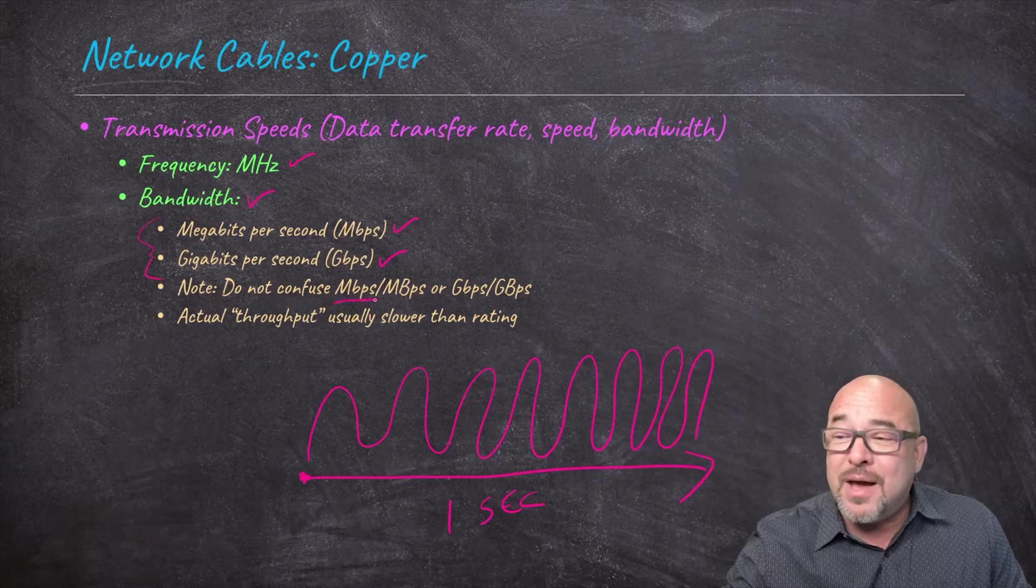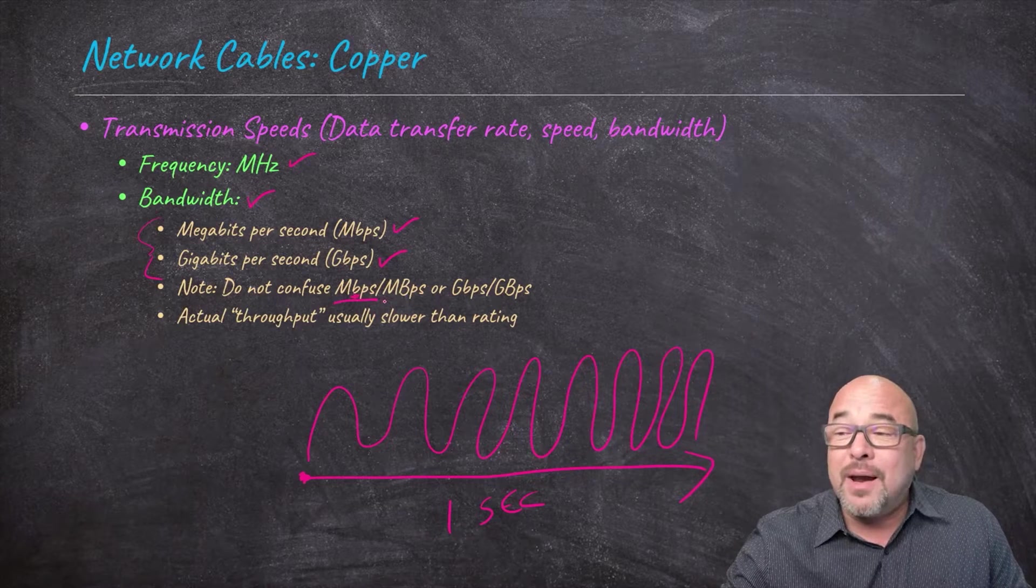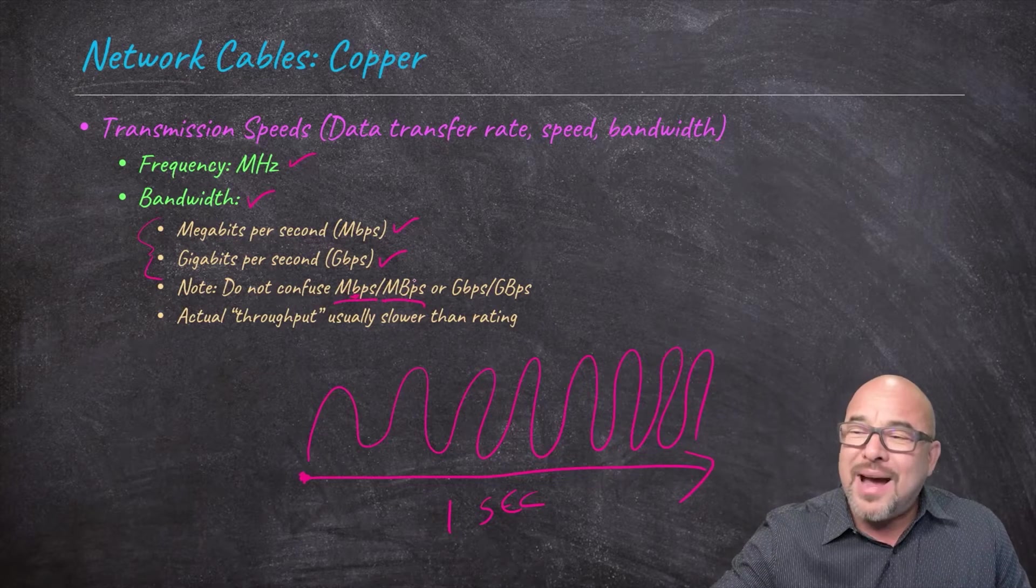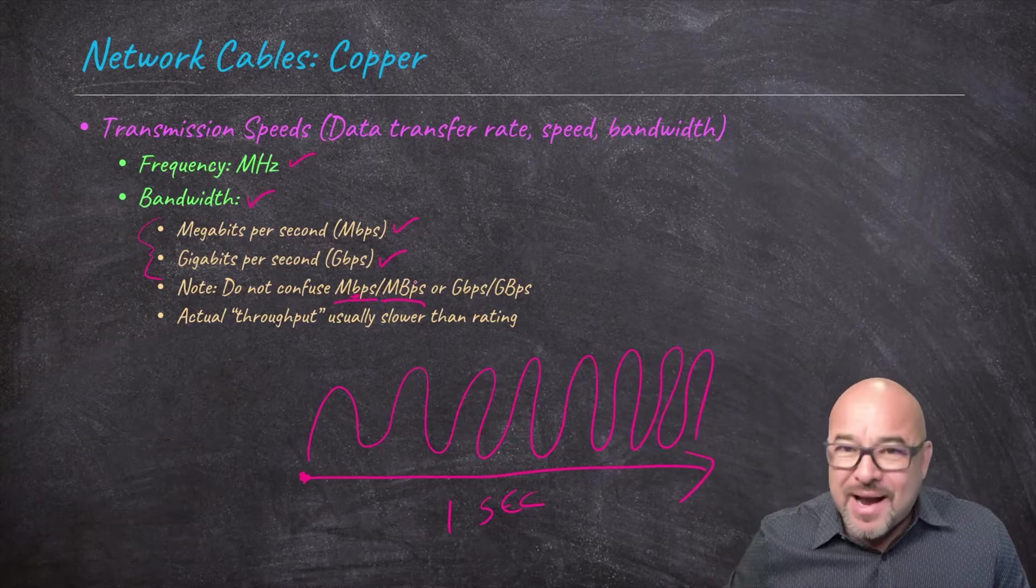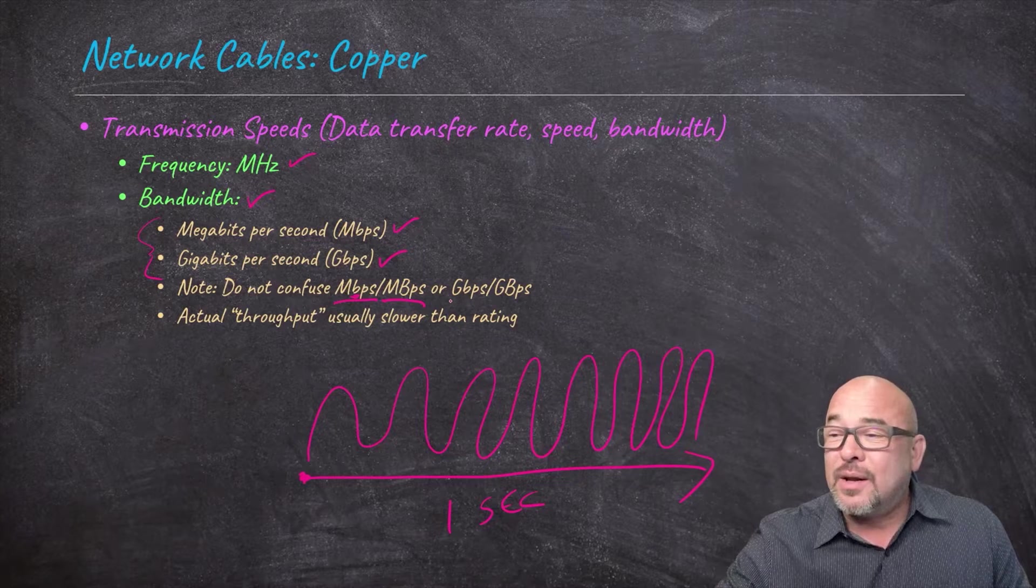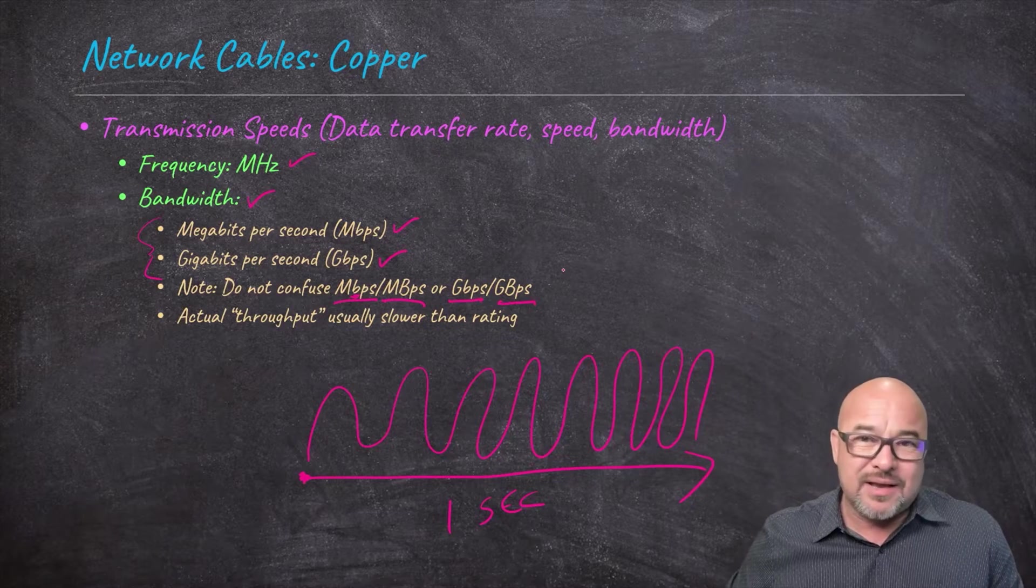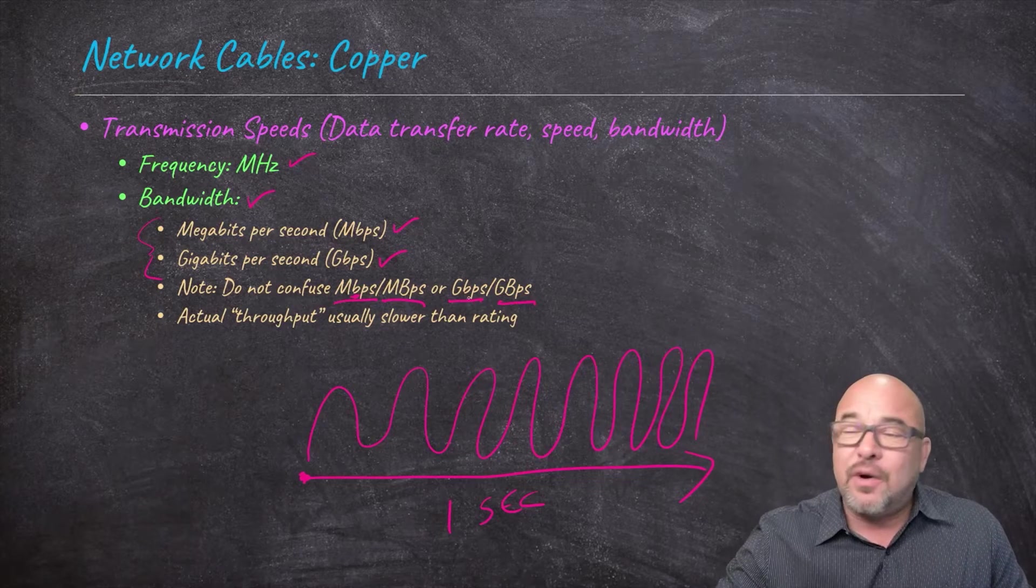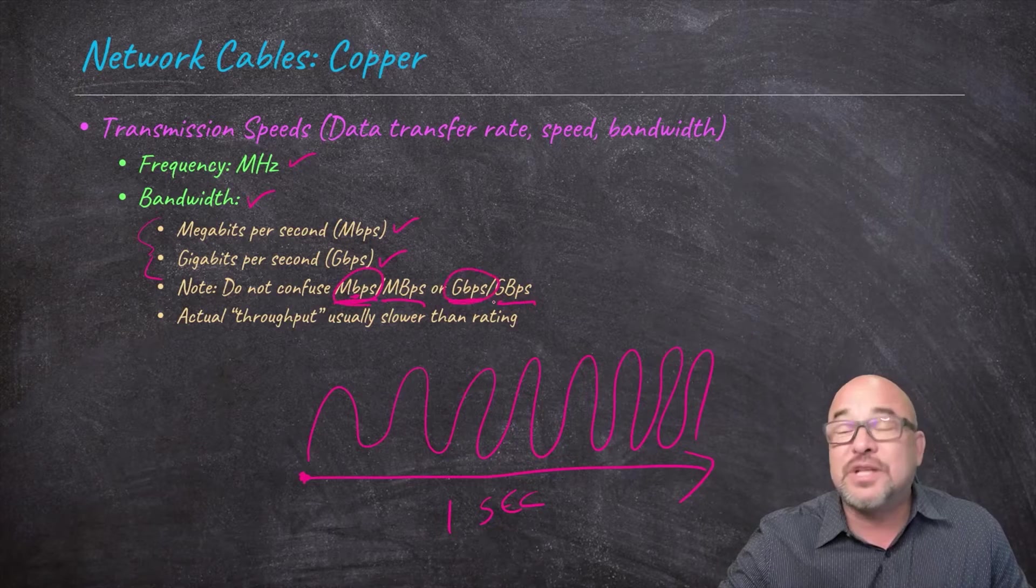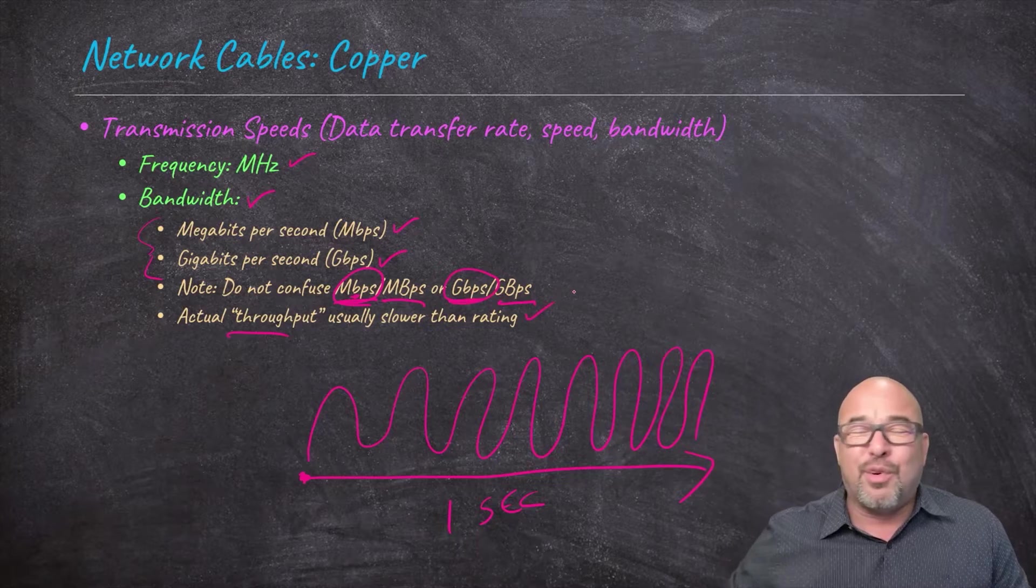They say that I can get up to a gigabit per second, that's gigabits per second. One gigabit per second. I paid for it once, and I never got any faster than 500 megabits. So I just went back to the cheaper plan. Anyway, so these are measures of speed, and networking, you're usually going to see megabits per second, gigabits per second.